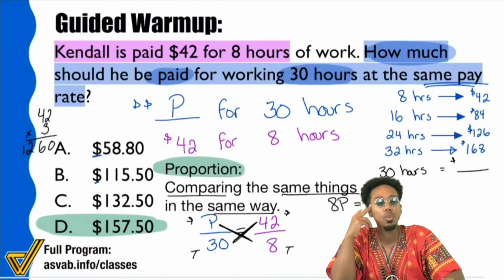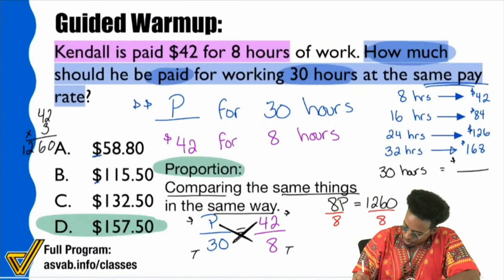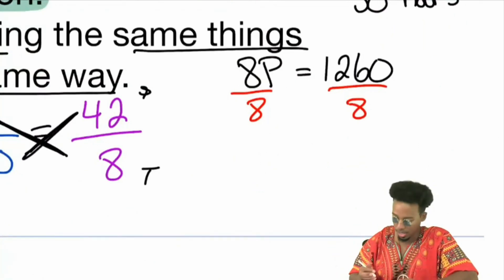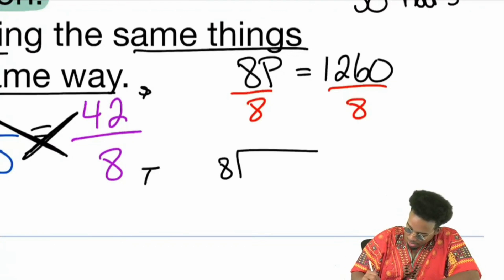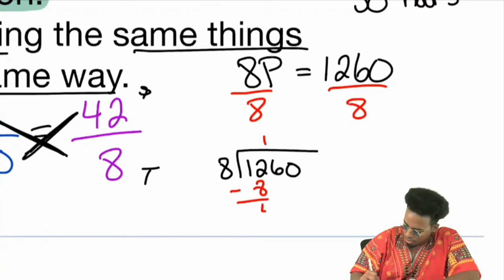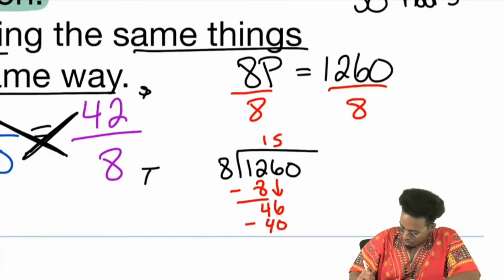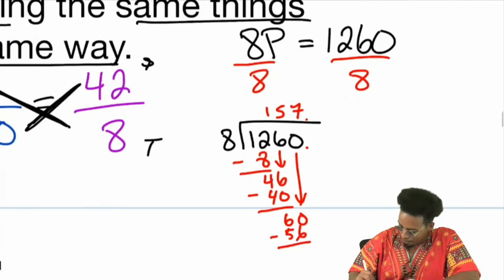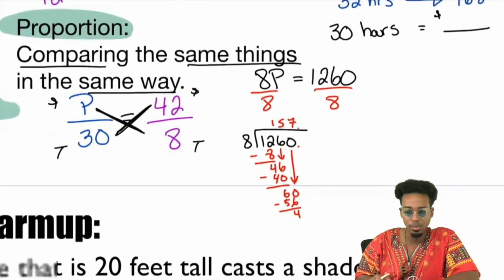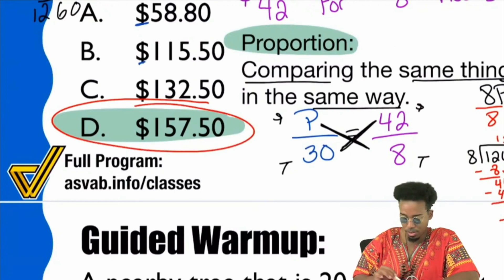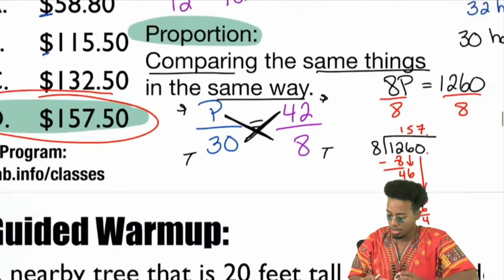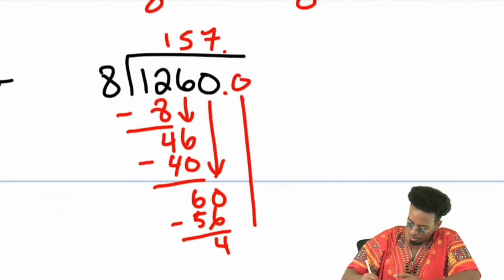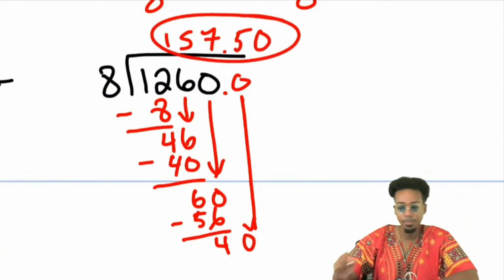What's the last step with proportions? Divide — divide both sides by 8. So we divide 8 into 1,260. 8 into 12 happens once. 8 into 46 is 5, giving us 40 with 6 left. 8 into 60 is 7 — that's 56 — with a decimal. At this point, you can honestly stop, because if you have $157 and some change, your only answer showing 157 is right there. Or continue: 8 goes into 40 five times — giving you $157.50.